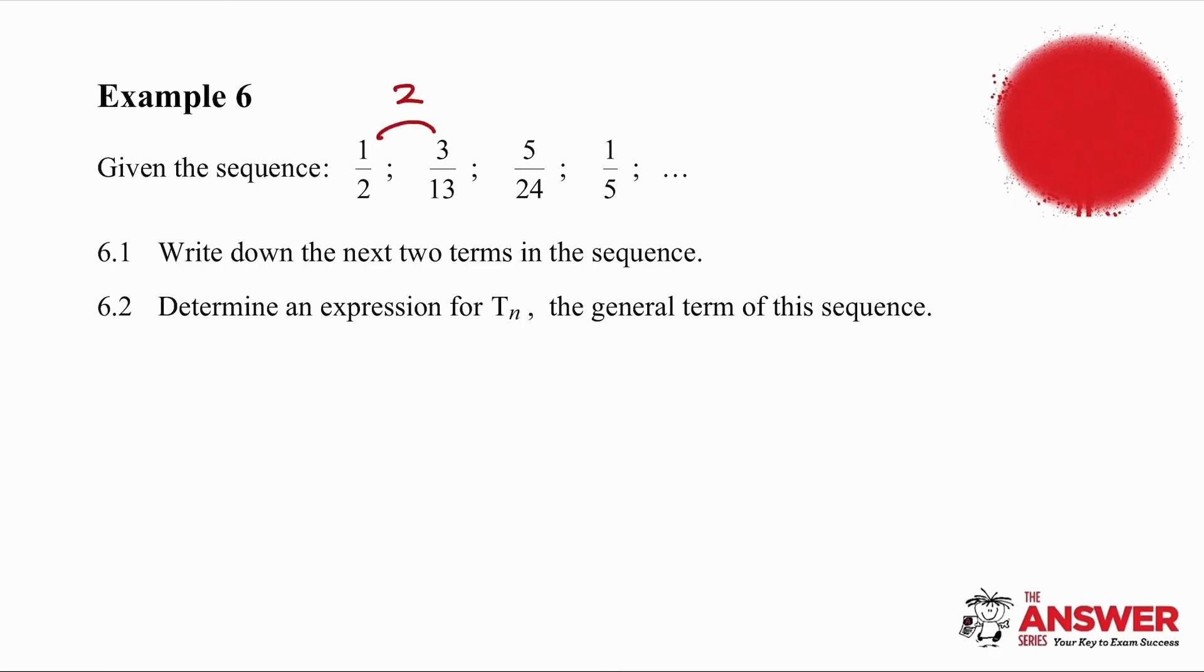So it starts very nicely with a gap of 2. And then 1 fifth stands out like a sore thumb, because it's not behaving. Hopefully, they've just simplified a fraction down to 1 fifth. So what we're going to do is ignore that for the time being and see what happens if we follow our own pattern. That would be 7. And then if we continue that, the next one would be 9. Now if we go to the denominators, we've got big gaps this time of 11, and 11 again. So now we're going to take a gap of 11, which will give us 35. Now pause and think about this. And 7 over 35 is in fact 1 fifth.